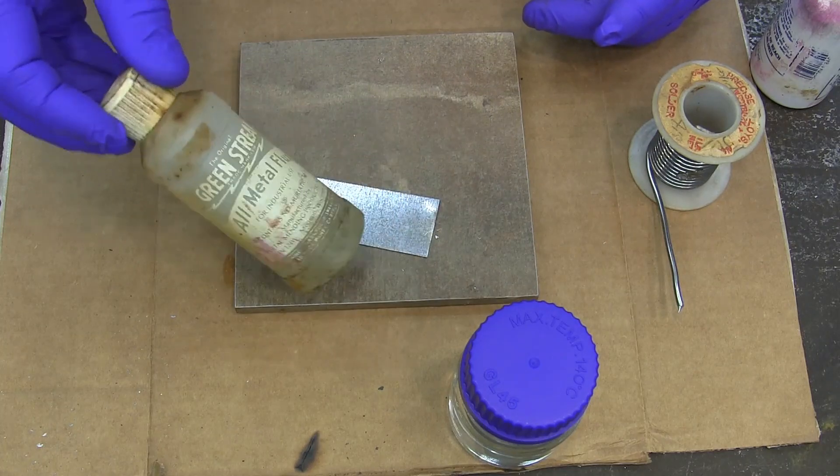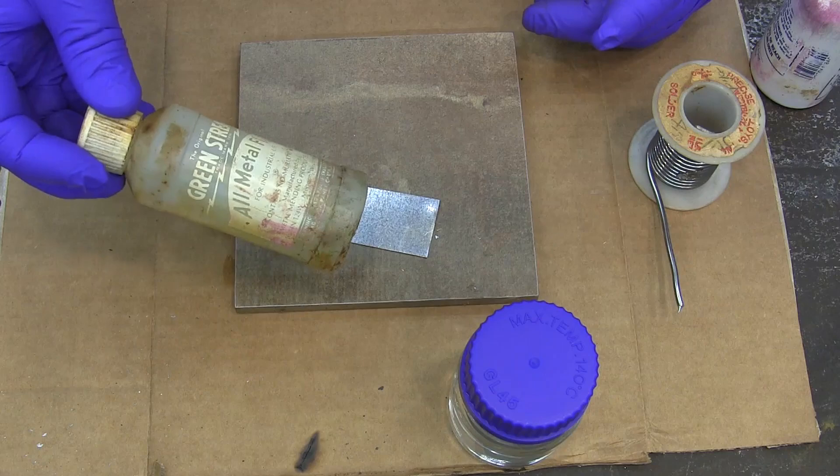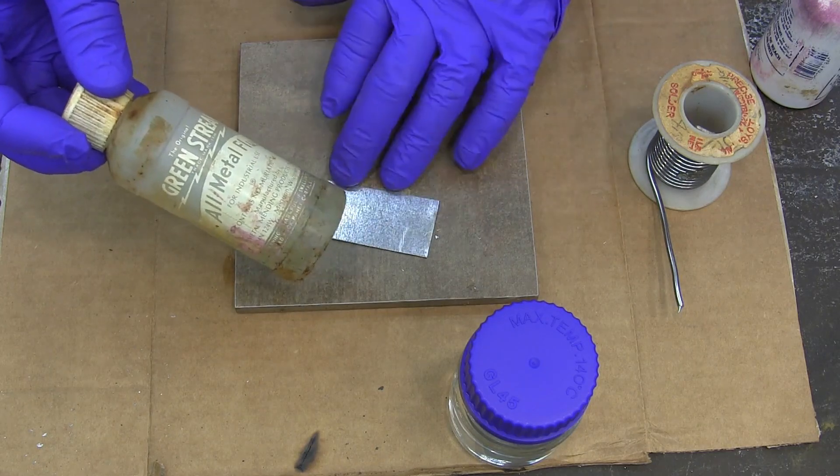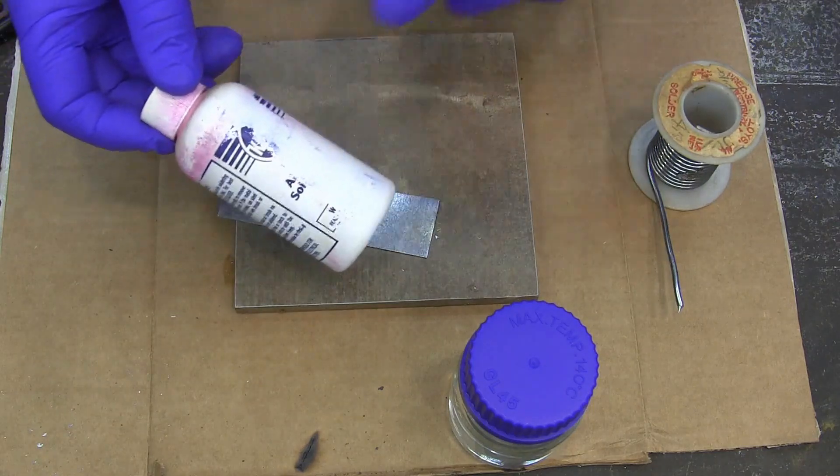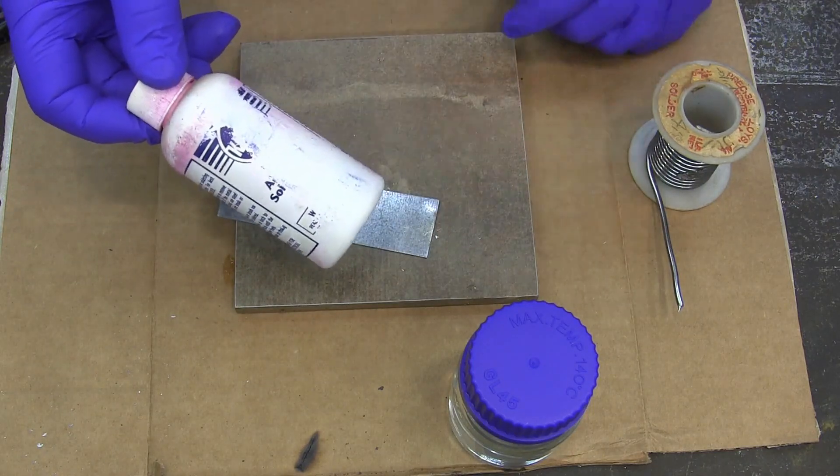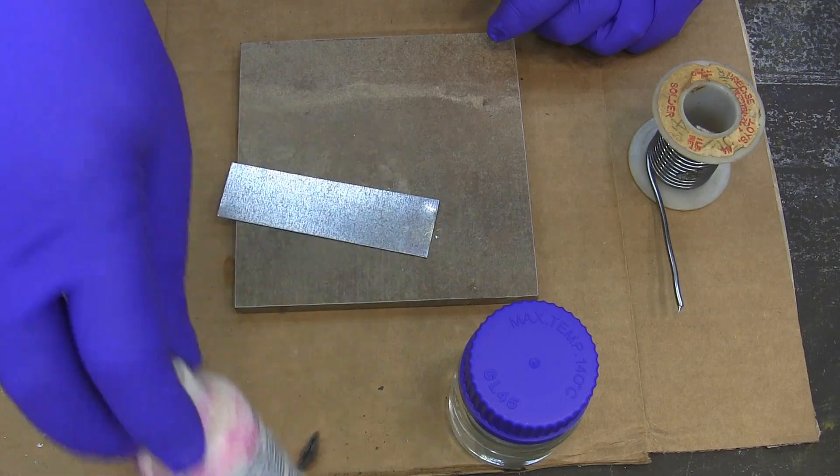This is some old flux I've had around forever. It's called all metal flux. I bought this to solder galvanized steel and it was totally unsuccessful. I think this is ruby flux. It's actually eaten off the side of it so I don't know. It was supposed to work for galvanized steel. It didn't work either.